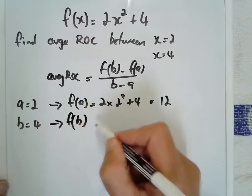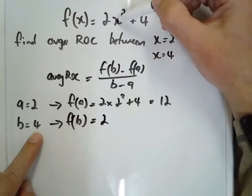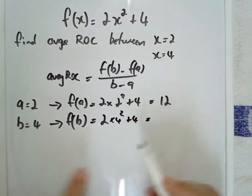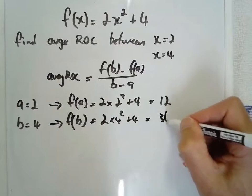For the B one, B is 4, so x is 4, so we're going to make that 2 times 4 squared. 4 squared is 16, 2 times 16 is 32, 32 plus 4 is 36.